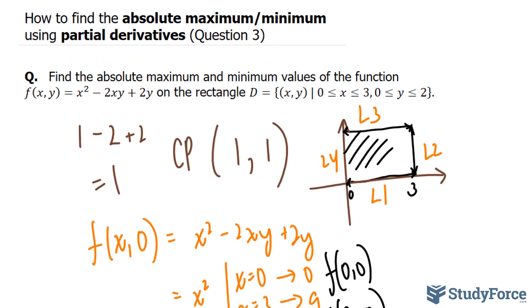And there you have it. That is how to find the absolute maximum, minimum, using partial derivatives.